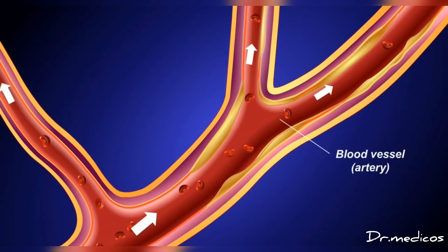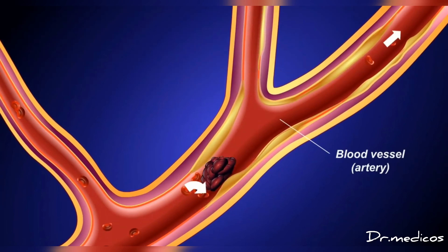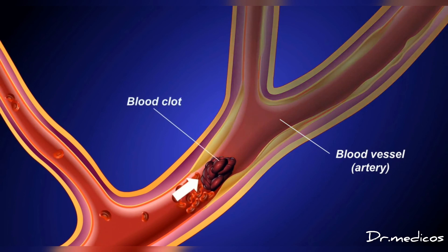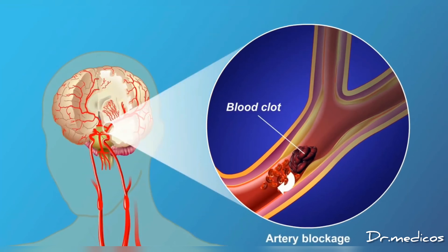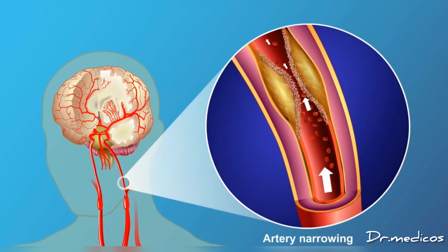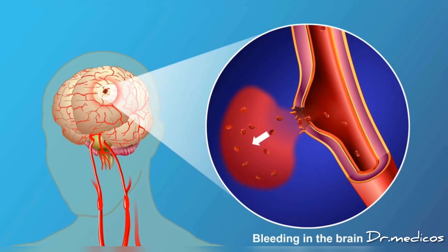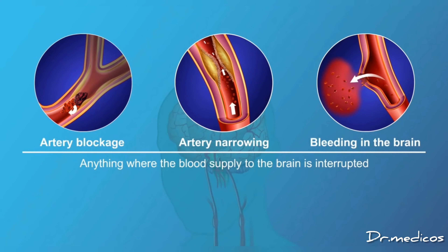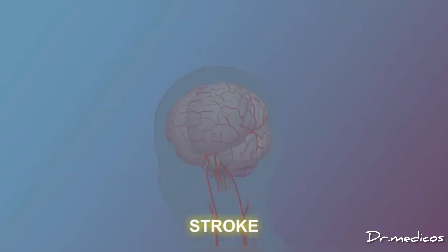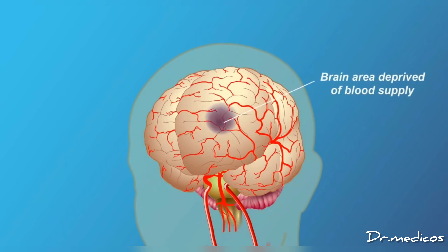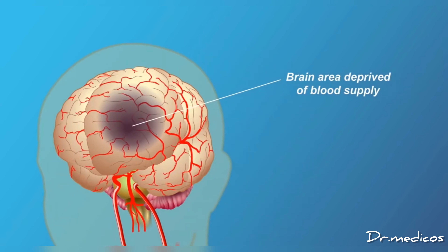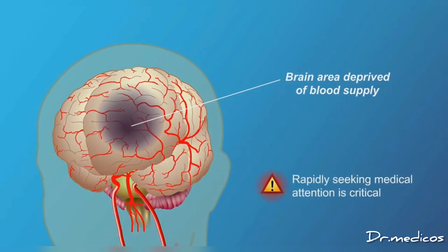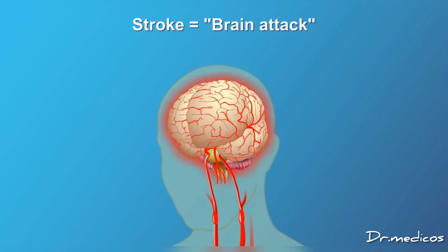A stroke occurs when the blood supply to the brain is blocked or reduced. That can happen because of a blood clot that breaks off and goes to the brain, or sometimes a narrowing in one of the arteries that supplies blood to the brain. In some cases, bleeding in the brain also causes a stroke. When a stroke happens, some brain tissue dies. Rapidly seeking medical attention is critical — a stroke is sometimes called a brain attack, which like a heart attack is always a medical emergency.